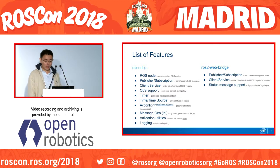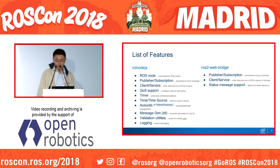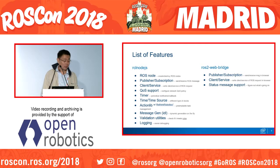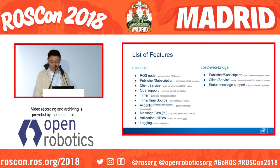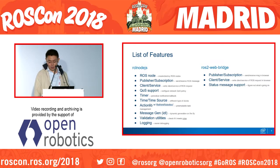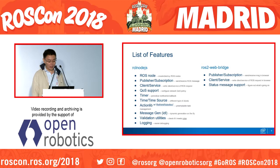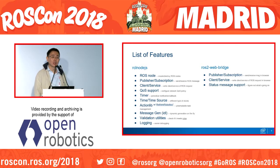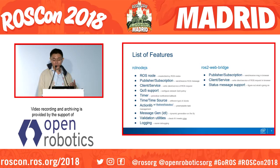What can we do with rclnodejs? Let's catch a glimpse of the main features. The rclnodejs has a comparable feature set to the Python client, such as publisher, subscription, and more. I'd like to point out the action lib — we collaborated with Chris from Resync Robotics. Through migrating the action lib Node.js module, we integrated it and exposed the client and server interfaces through a ROS node. I believe rclnodejs is the first client to implement this feature.